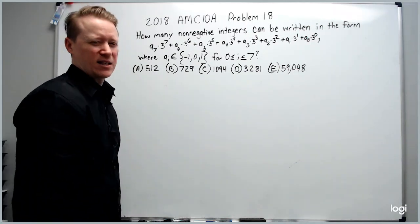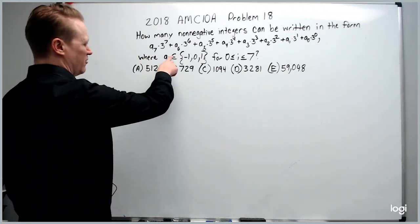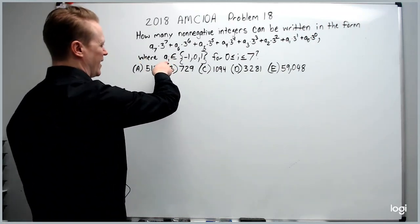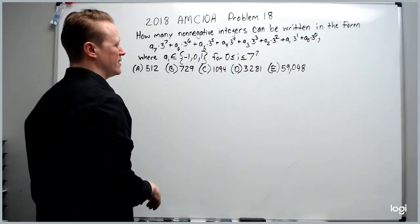This problem's difficulty, somewhat, is the notation. For a lot of people, they don't know what the symbol means, or they don't know how to handle a sub i. What does it mean that i is between 0 and 7?